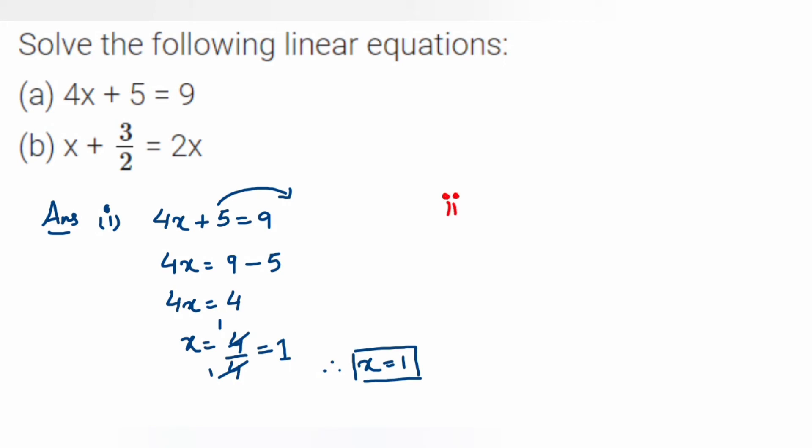So the second question is x plus 3 upon 2 is equal to 2x. Now if you see here, there is only one numerical term, that is our number 3 upon 2, and the 2x and x. To get the value of x, we're going to transpose x to the other side instead of transposing 3 upon 2.